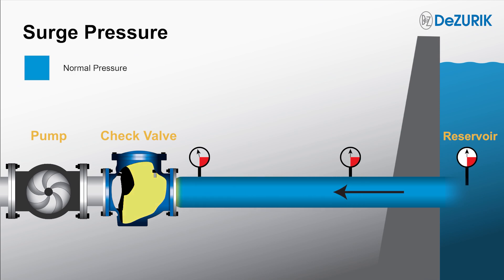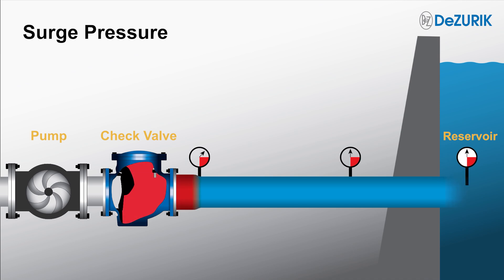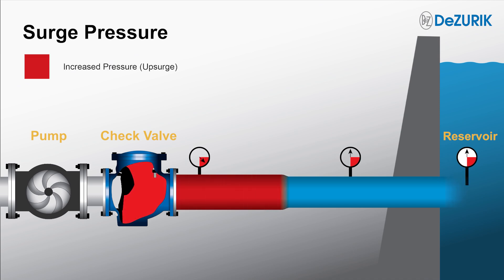The surge wave has made one round trip through the system. The time it takes for the surge wave to make a round trip is known as a surge period. Another fluid velocity change is then created by the closed check valve, causing an upsurge, shown in red, at an increased pressure that begins at the valve.